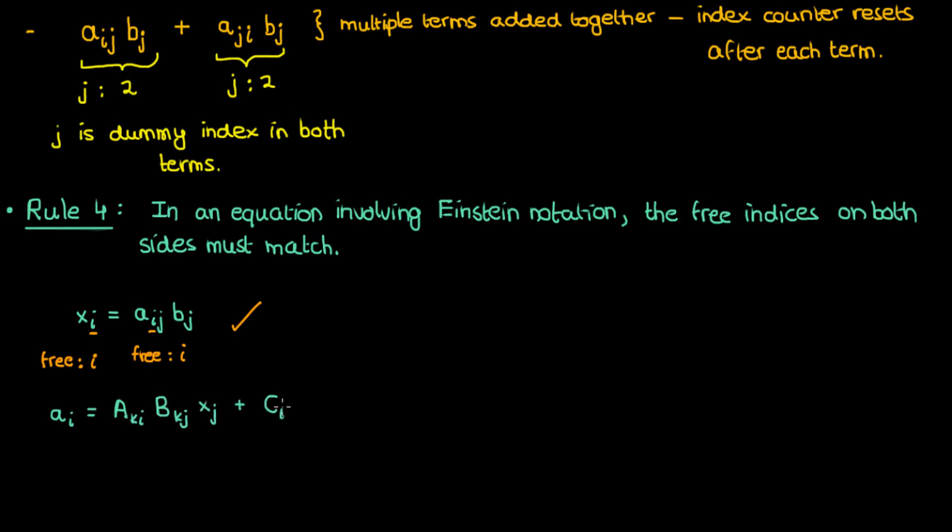In addition, if we had something like the second equation, then again the only free index on the right hand side is i, because if you look at the terms, j appears twice in this first term, and k appears twice in both the first and second terms. This means that j and k are dummy indices, but i only appears once in the first term and once in the second term, so therefore it's a free index. And on the left hand side, i is also the only free index, which means that both sides are consistent.